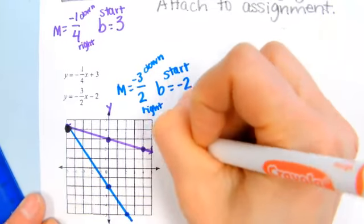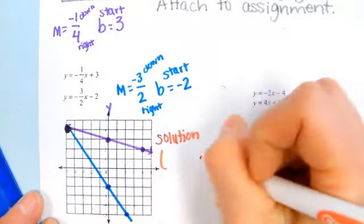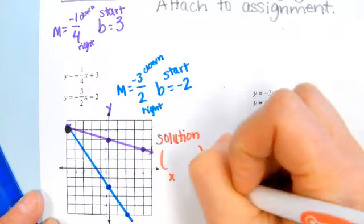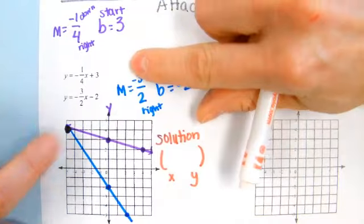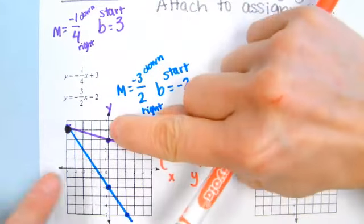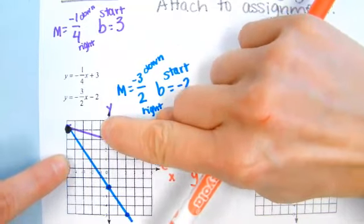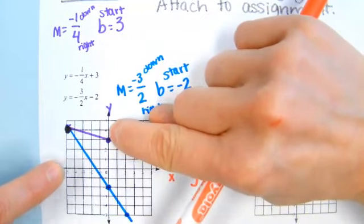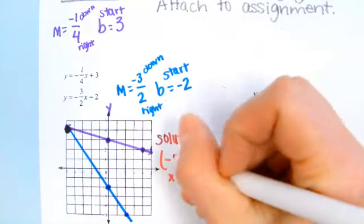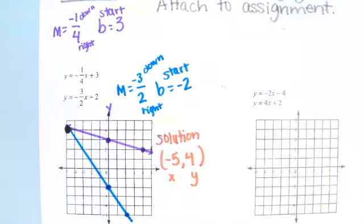The solution, the final answer we are looking for is this ordered pair right here. It's always x comma y. The way we find it is by taking our fingers. We're trying to get here. Put one finger on the y-axis and one on the x-axis where you would start to find that. Follow the line, and that's where it crosses. If you follow it back, what are those numbers? This number is negative five. And this number up here is four. That is our final answer. Let's do it again. Another example.